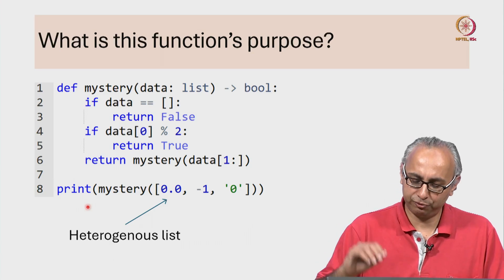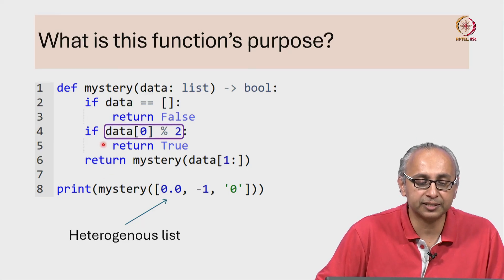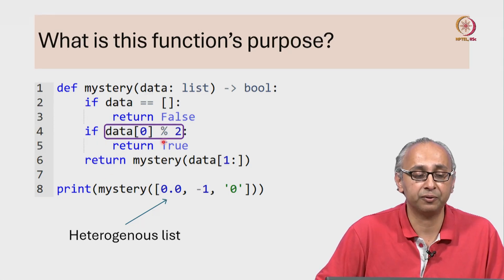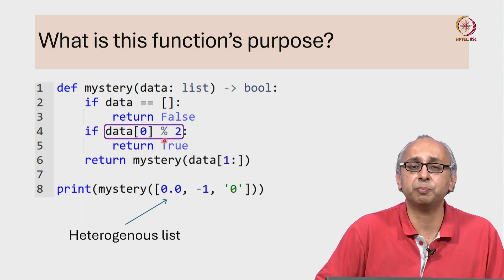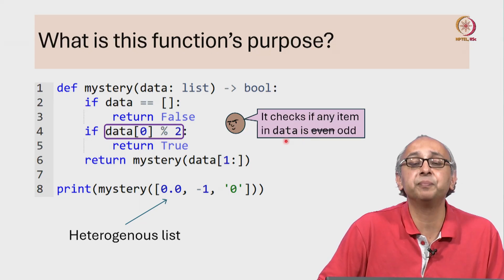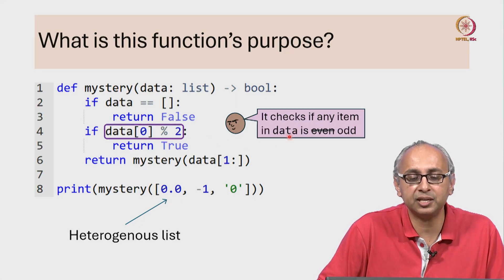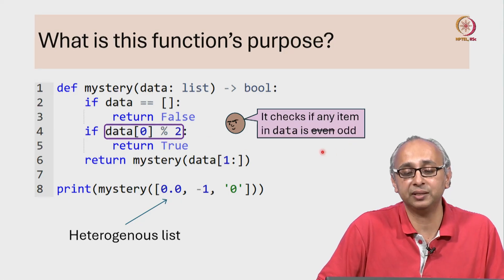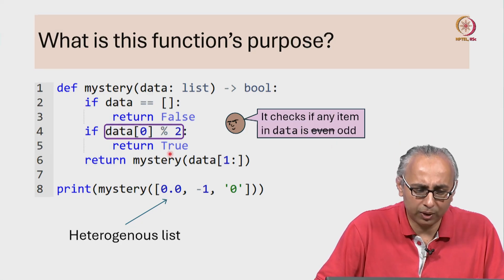Well, our friend has taken a good look at this function and in particular has seen this line 4 which seems to be calculating the remainder by 2. So our friend initially thinks that this function checks if any item in the given list data is even. But then our friend very quickly corrects themselves and says no, actually what it does is it checks if any item in this list is odd.